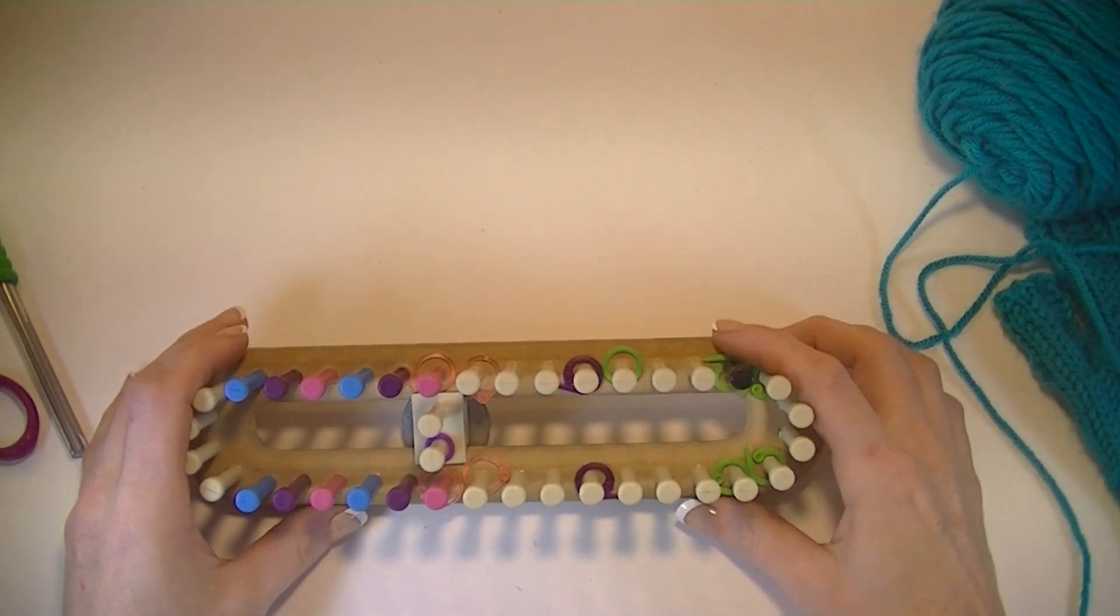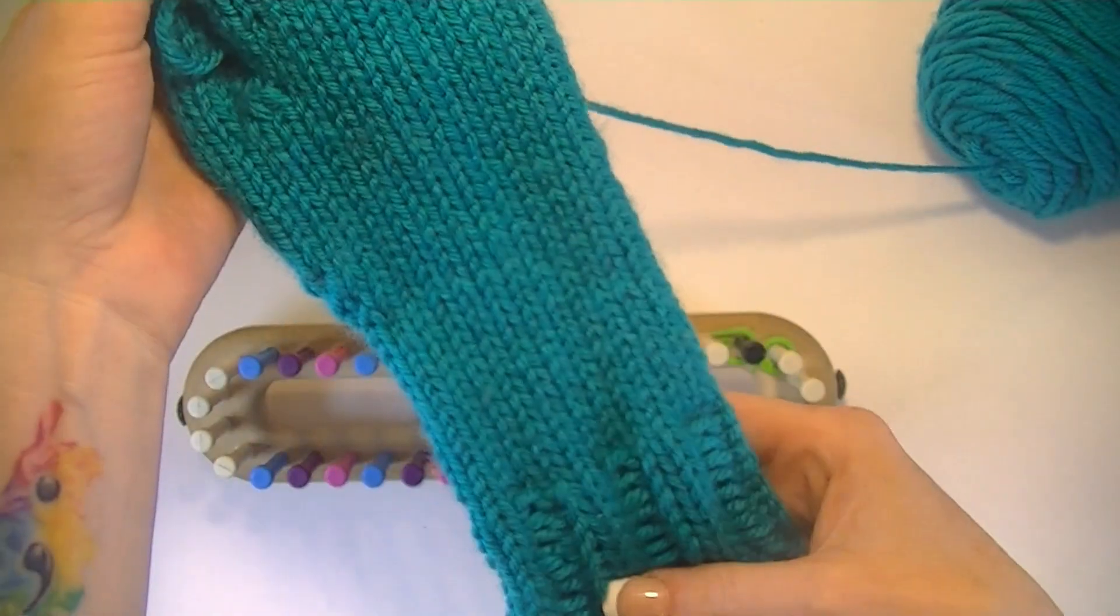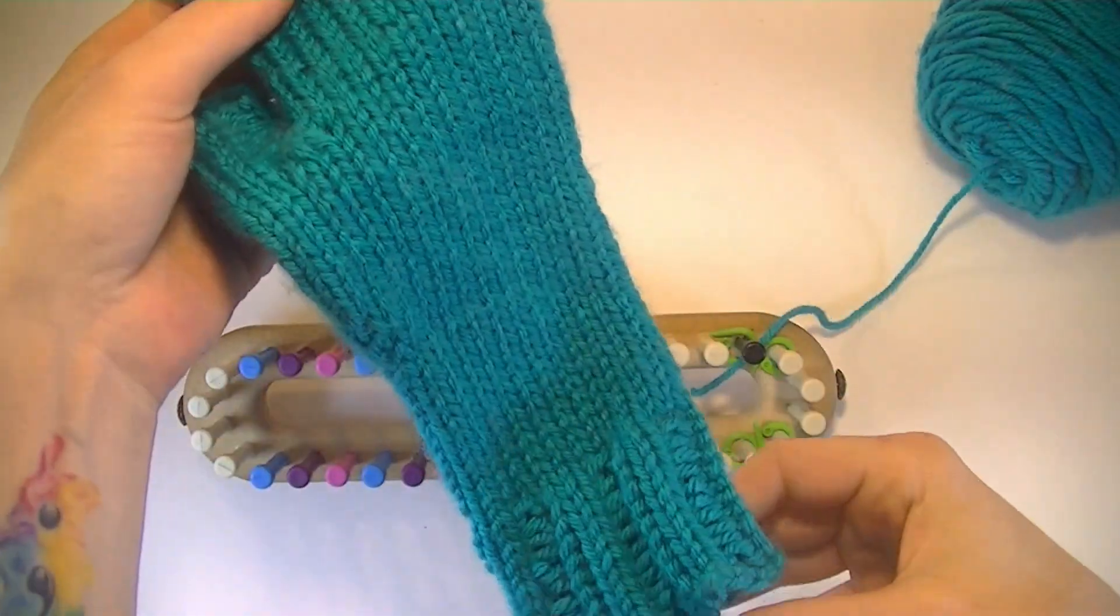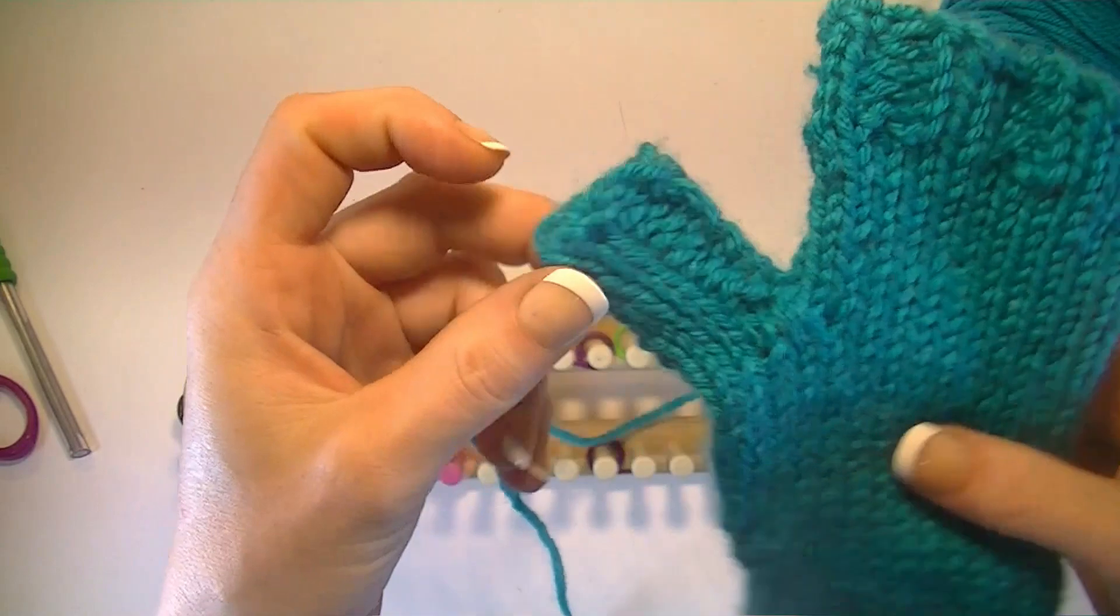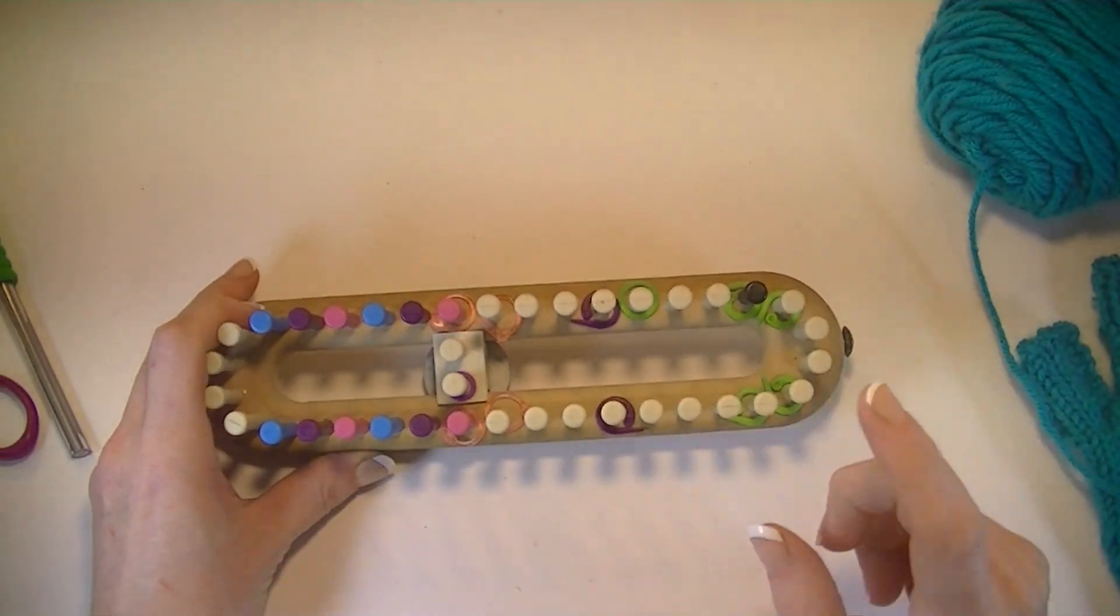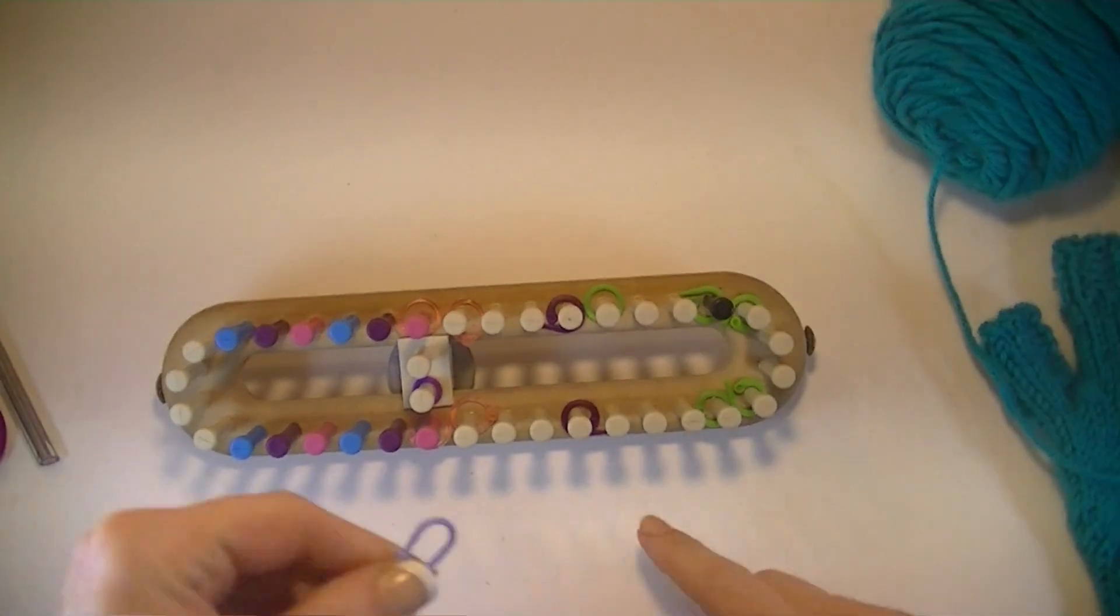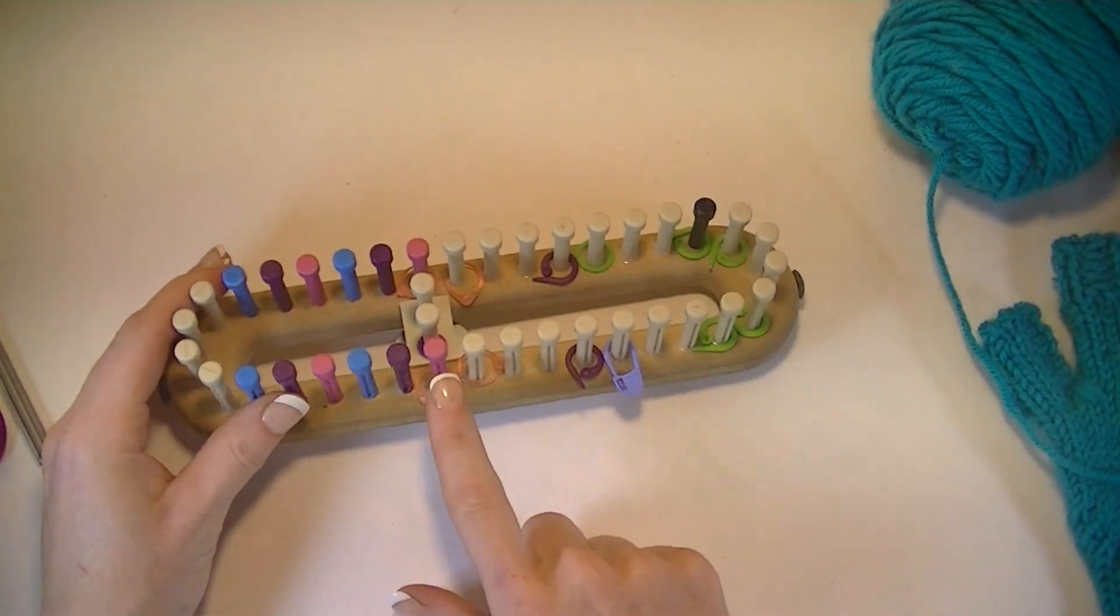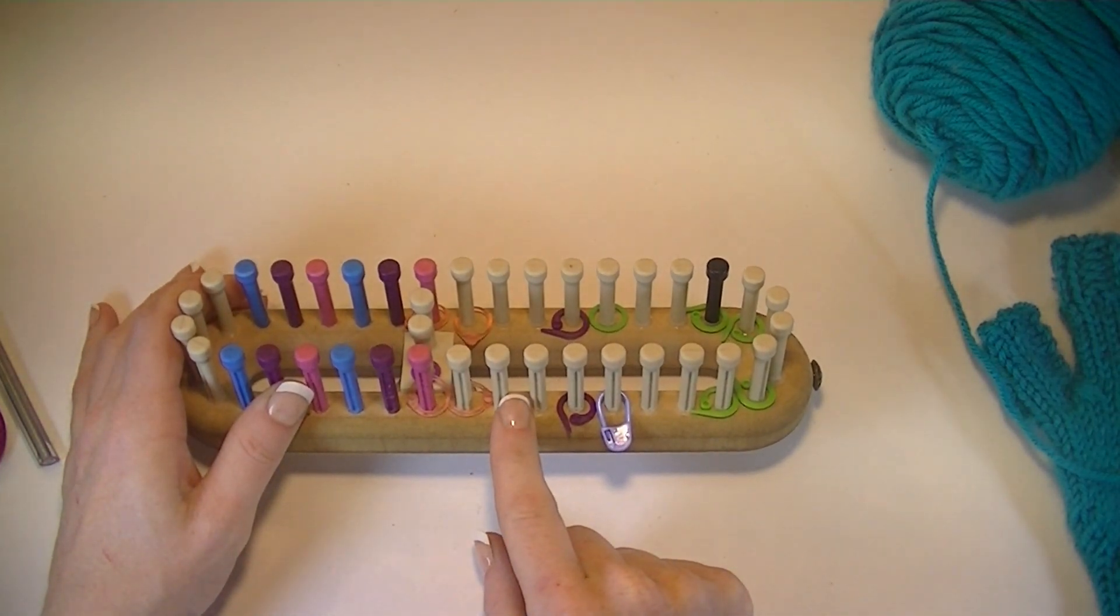Now we only need these pegs marked for the cuff, the top and the bottom, and the thumb. I am marking them two by two. That way I know if they're marked I will purl stitch. If they're not marked I will e-wrap.